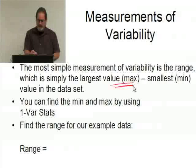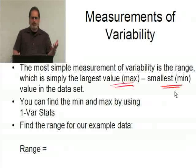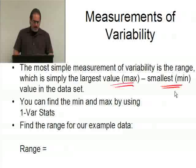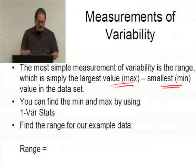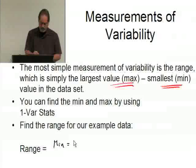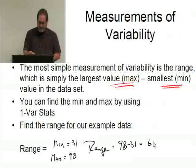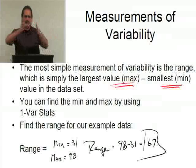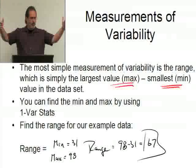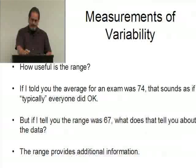The most simple measurement of variability is the range. The range is simply the largest value (the maximum) minus the smallest value (the minimum). Your calculator will give you those from one-variable statistics, as we looked at in a previous chapter. For this data set, the minimum is 31 and the maximum is 98, so the range is 98 minus 31, which is 67. The range tells us how much spread there is between the smallest and largest values.